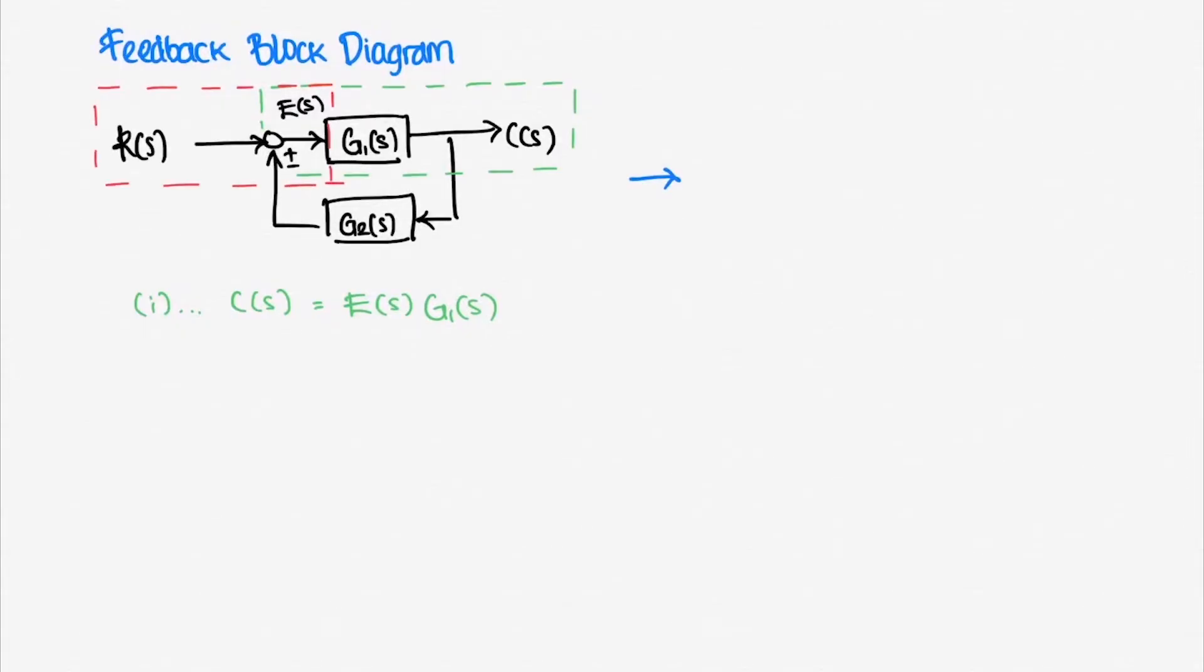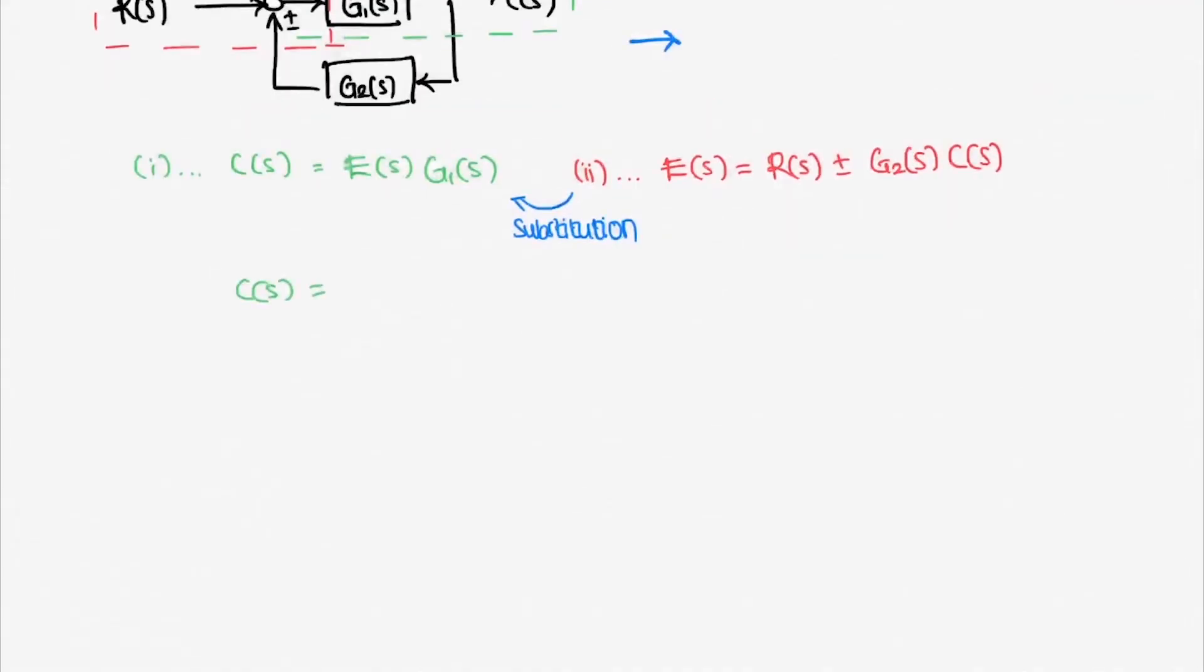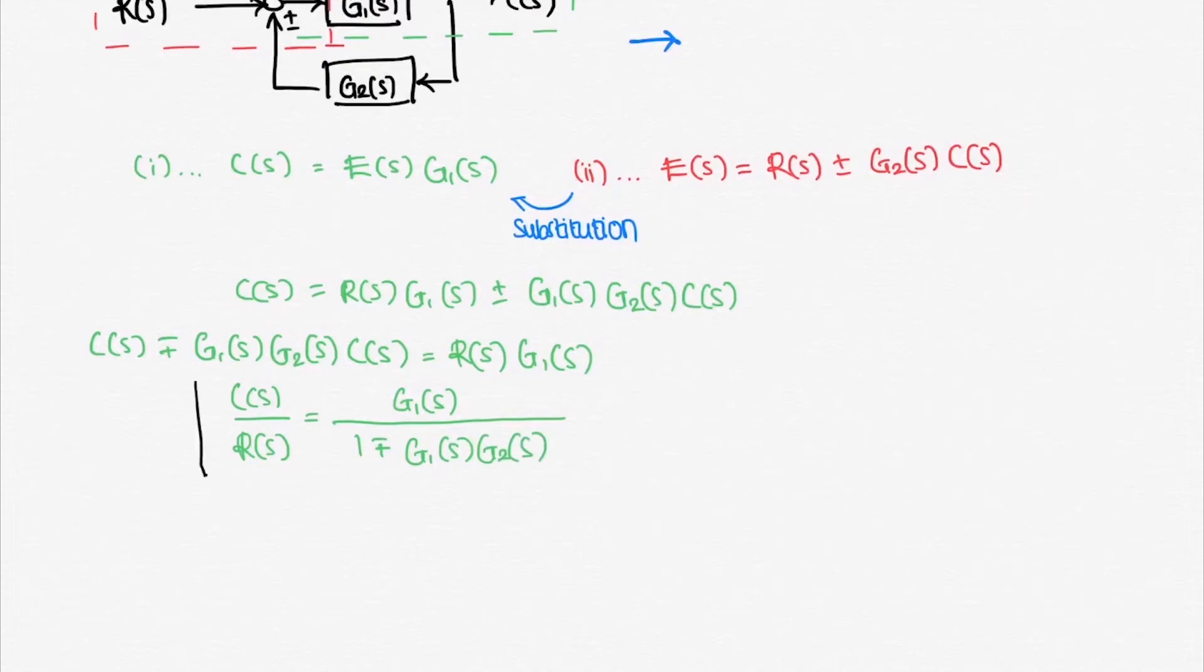From here, just substitute the second equation into the first equation. Then separate C(s) and R(s) to get this simplified version. So the simplified version of our feedback block diagram is G1(s) over 1 minus/plus G1(s) times G2(s).